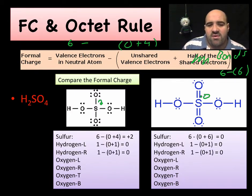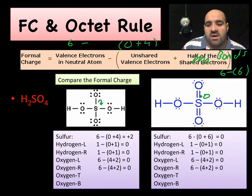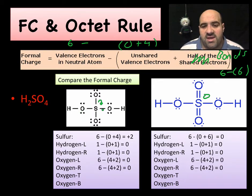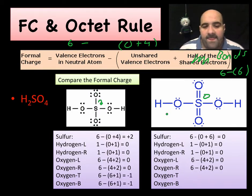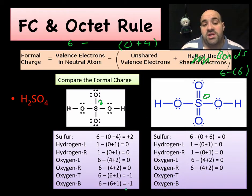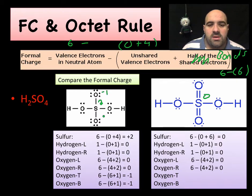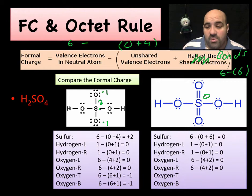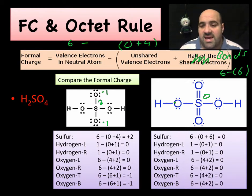If you keep doing the math, both hydrogens have a formal charge of zero in either structure. As it turns out, the oxygens connected to hydrogen on the left and right also have zero formal charge. But remember, these other oxygens — the ones without hydrogens — are a little different, so we have to do them separately. In the single-bond structure, the oxygen on the top has a formal charge of −1 and the oxygen on the bottom has a formal charge of −1. Everything else is zero. On the right side — the double-bond structure — everything is zero formal charge.